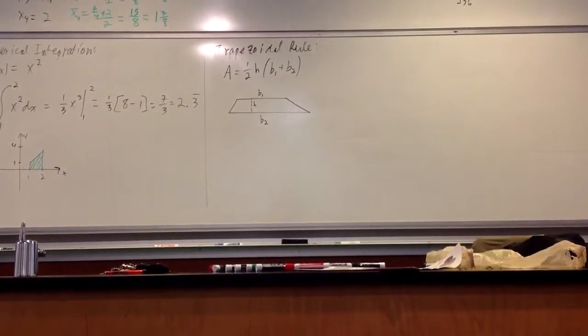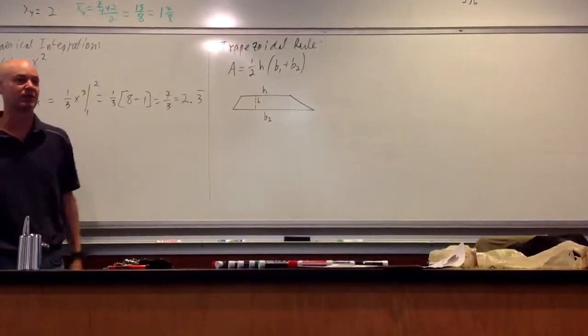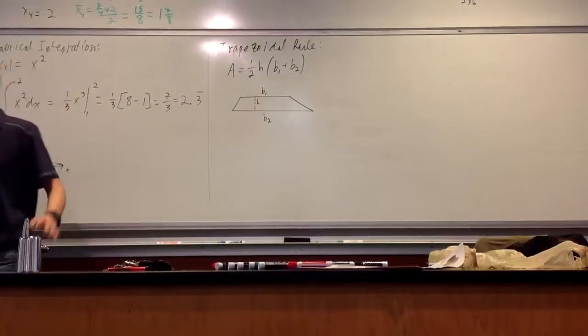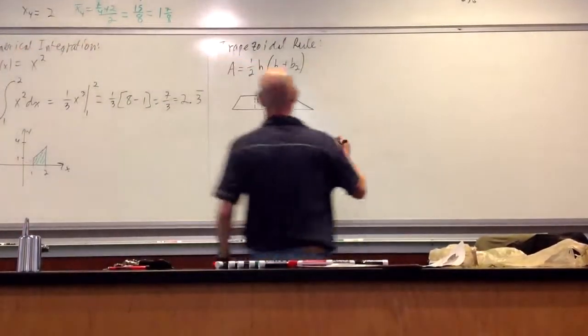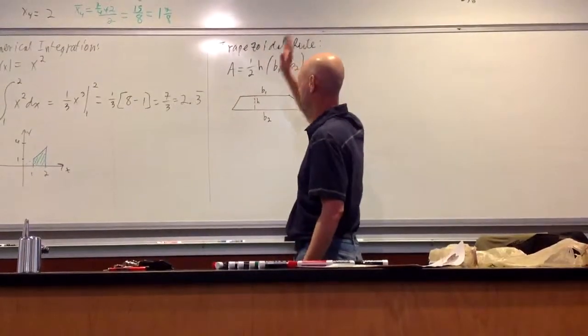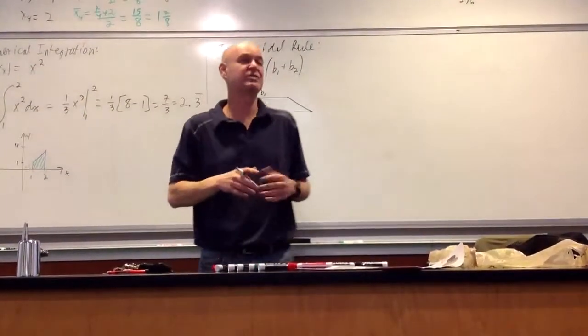Some people view it differently, that's fine. You can break it up into triangles and rectangles and do a whole proof of whatever. We're going to use this formula to do what we're about to do here. Again, we're going to do the same function here from one to two. We'll see if it's more accurate or not.